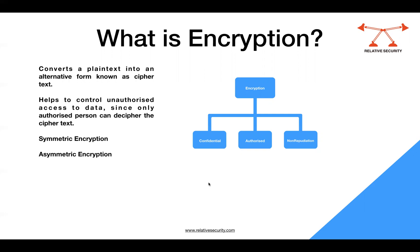The ciphertext cannot be understood because it has been converted from plain text to ciphertext through encryption algorithms. If data is encrypted, it ensures that any unauthorized person cannot access or understand the data unless it has been deciphered — converted back to plain text.